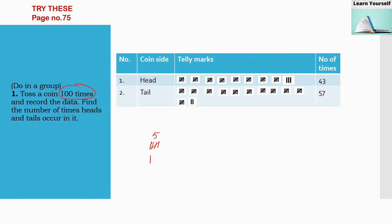Similarly, tails occurred 57 times. You can write any combination of numbers, but the only thing you have to take care of is that the addition of these two numbers has to be 100. It can be any possibilities — 20 and 80, 30 and 70, or any other combination — but they must add up to 100 because we are tossing a coin 100 times. You have to do tally marking accordingly.